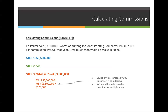Step two: we must identify his commission rate — in this case, 5%. We can rewrite that as: what is 5% of $3,500,000? We convert 5% to 0.05 by dividing by 100, then multiply: 0.05 times $3,500,000. The total amount that Ed made in 2009 was $175,000.